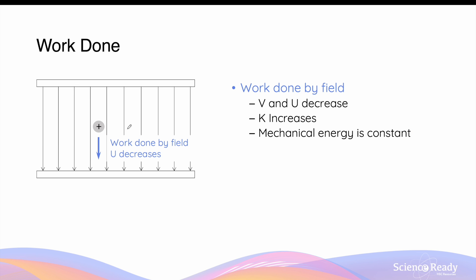When we talk about work done in the context of an electric field, we must distinguish between work done by the field and work done against the field. When a positive charge is placed in the field, it accelerates due to the force towards the negative plate — this results in work done by the field. When work is done on the charge by the electric field, both the electric potential and potential energy decrease. By the law of conservation of energy, the reduction in potential energy is transformed into the charge's kinetic energy — the decrease in PE equals the increase in KE. The mechanical energy of the charge remains constant.